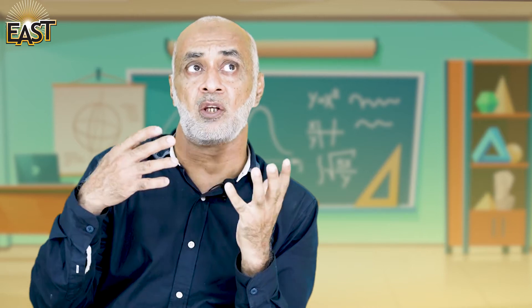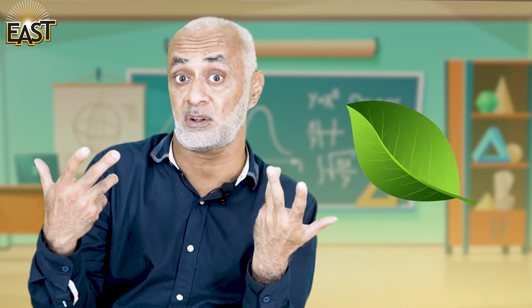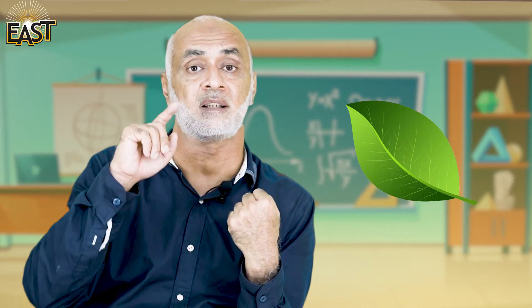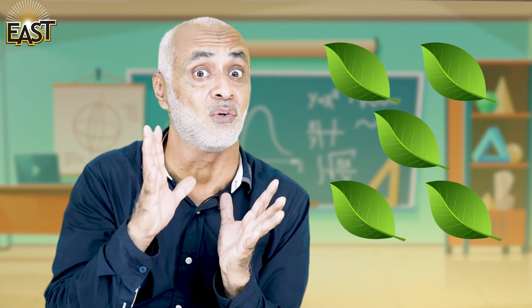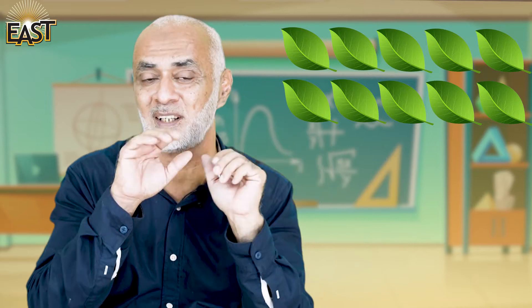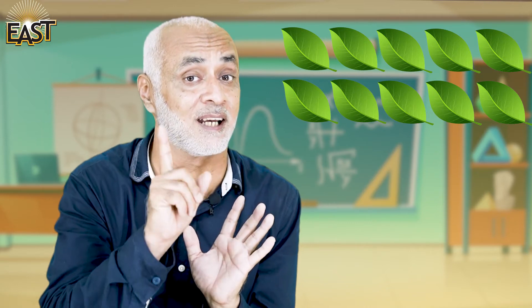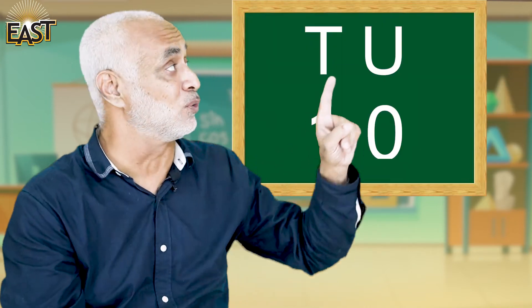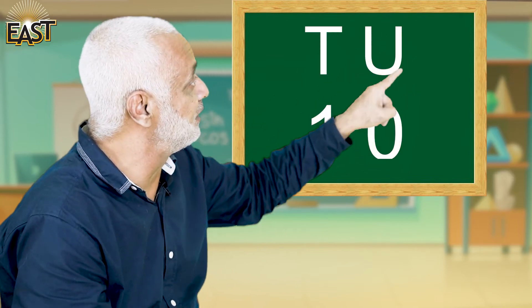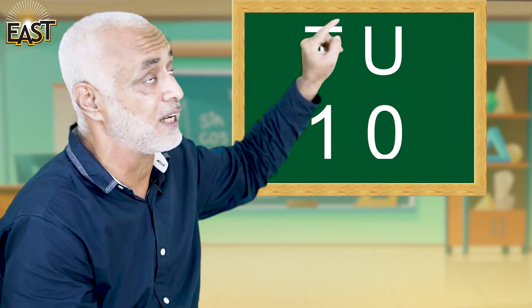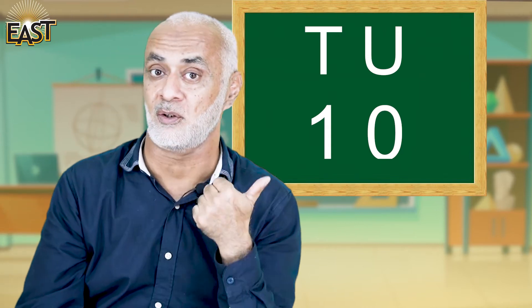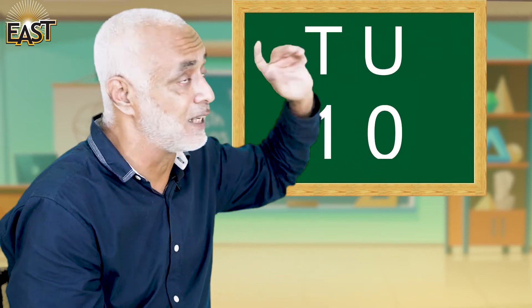Now you tell me — you have one leaf, so that is one unit. What about if you have five leaves? That is five units. And if you have ten leaves, what is that? That is one ten. So you write one ten like this: one under T and zero under U. You got it? Good — this is one ten.